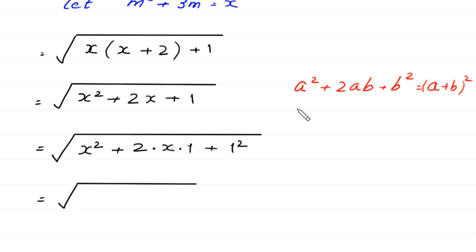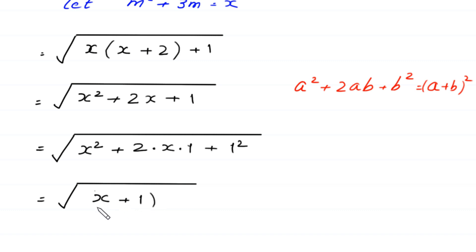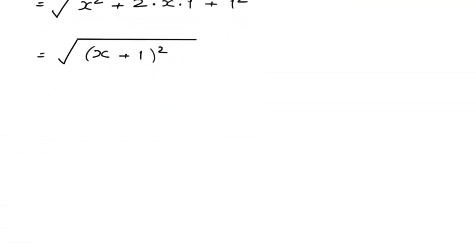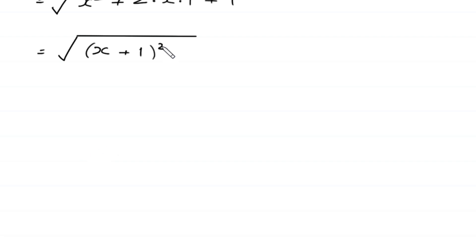As the identity states, a squared plus 2ab plus b squared equals (a plus b) squared, so x squared plus 2 times x times 1 plus 1 squared equals (x plus 1) squared. The square cancels with the square root, leaving us with x plus 1.